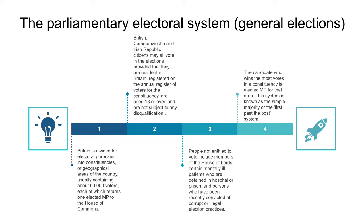People not entitled to vote include members of the House of Lords, certain mentally ill patients who are detained in hospital or prison, and persons who have been recently convicted of corrupt or illegal election practices.